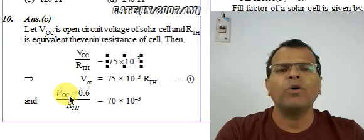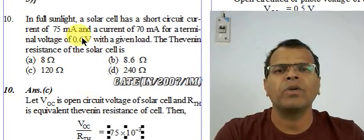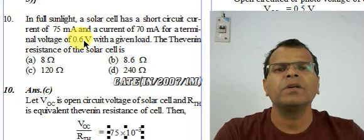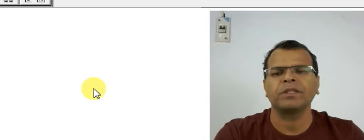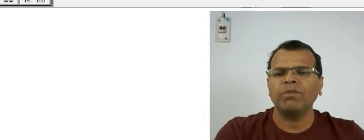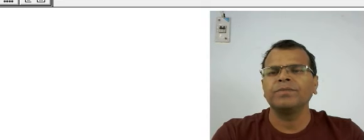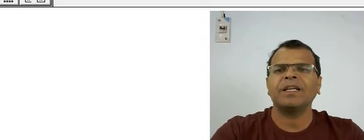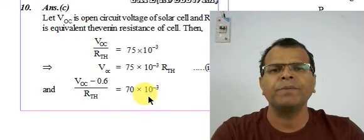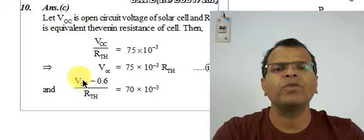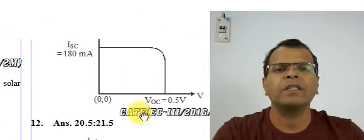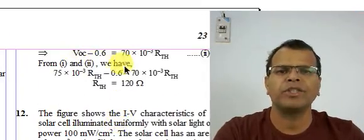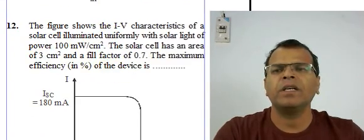Another relationship is: open circuit voltage minus the terminal voltage drop, which is 0.6 V, divided by Rth equals 70 milliamperes. So (VOC − 0.6) / Rth = 70 mA. This is more of a network theory question than a pure EDC question. From these two relations, you can solve for Rth.